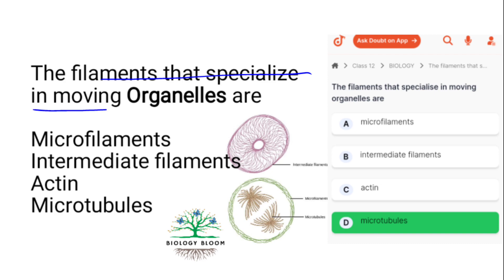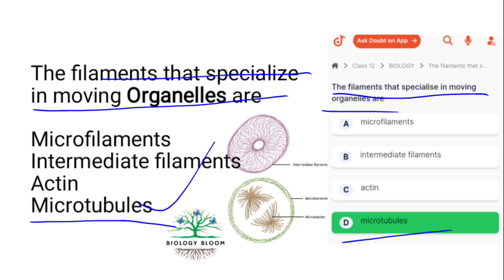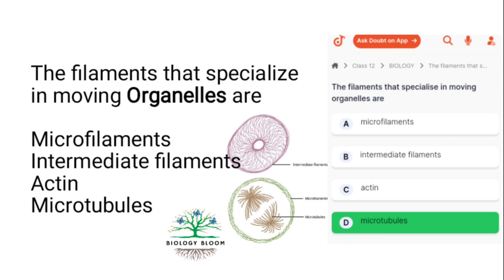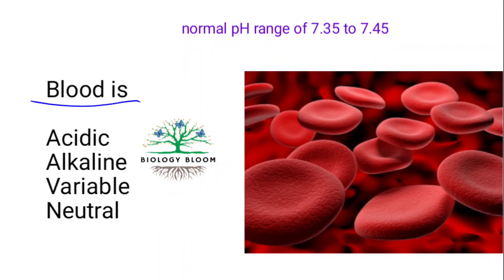The filaments that specialize in moving organelles are microtubules. The filaments that specialize in moving organelles are also actin. Now, blood is alkaline or basic and its pH is in the range of 7.35 to 7.45 — slightly basic or alkaline.